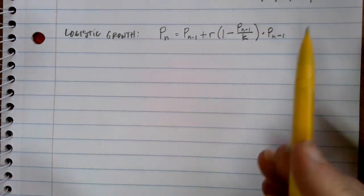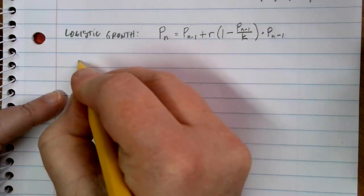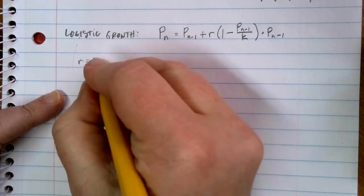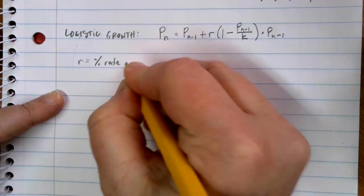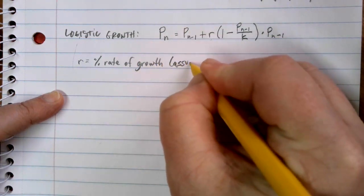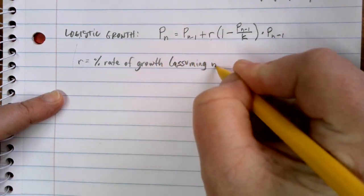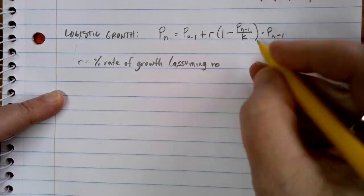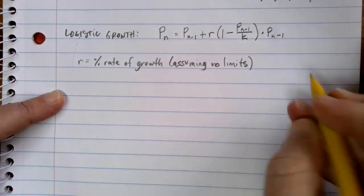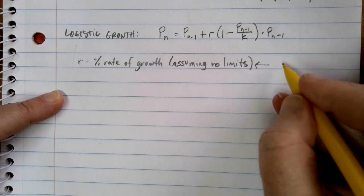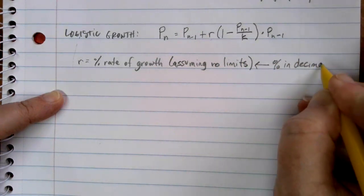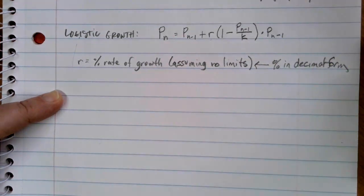We see some things that we kind of recognize here. R is just like what R was in our exponential formulas before. R is going to be our percentage rate of growth, and this is assuming no limits. If there was infinite food and infinite space, this is how fast our population would grow. And that will be given to you as a percentage. And just like any percentages in any formula, we need to write our percentage in decimal form here.